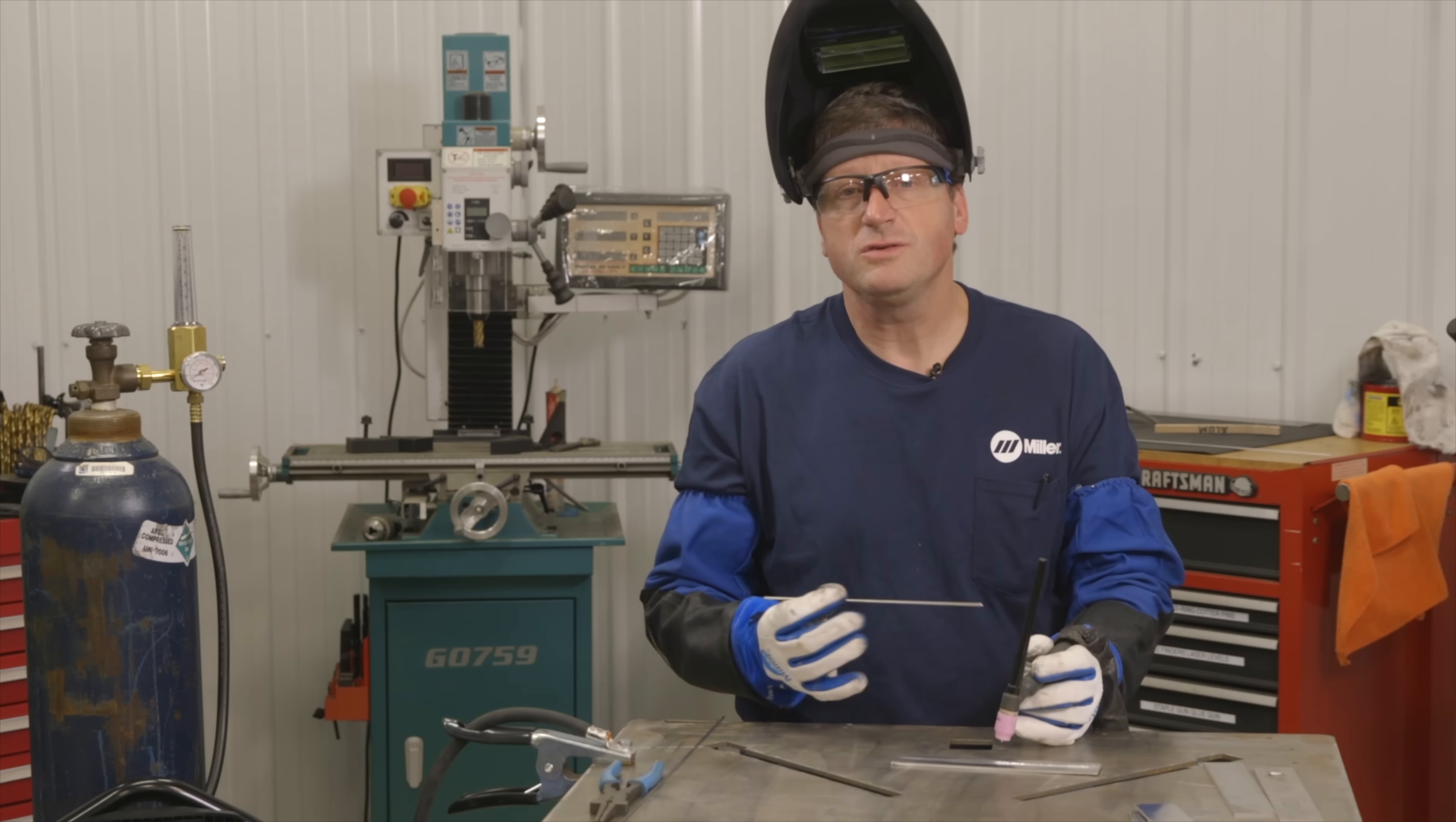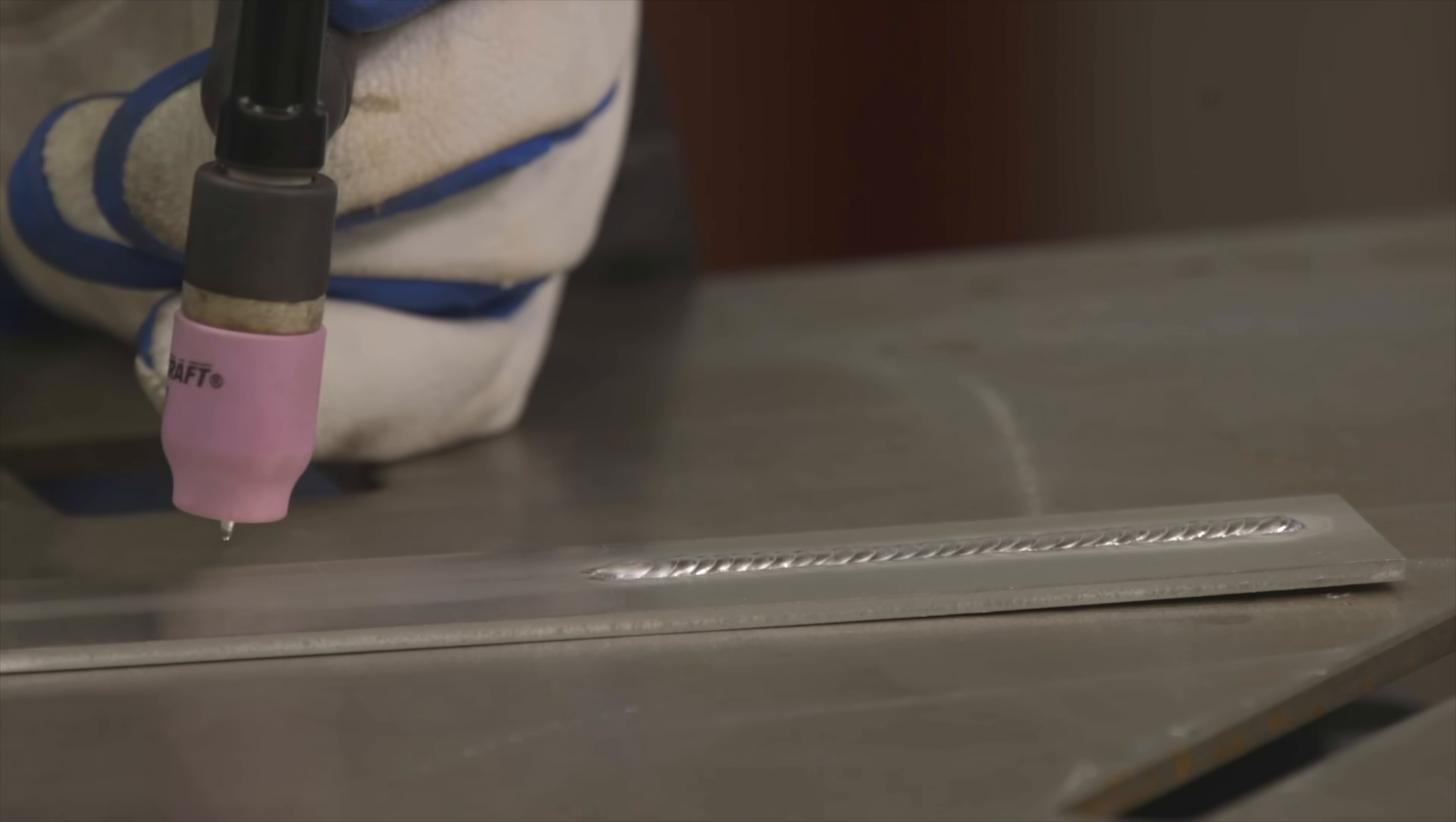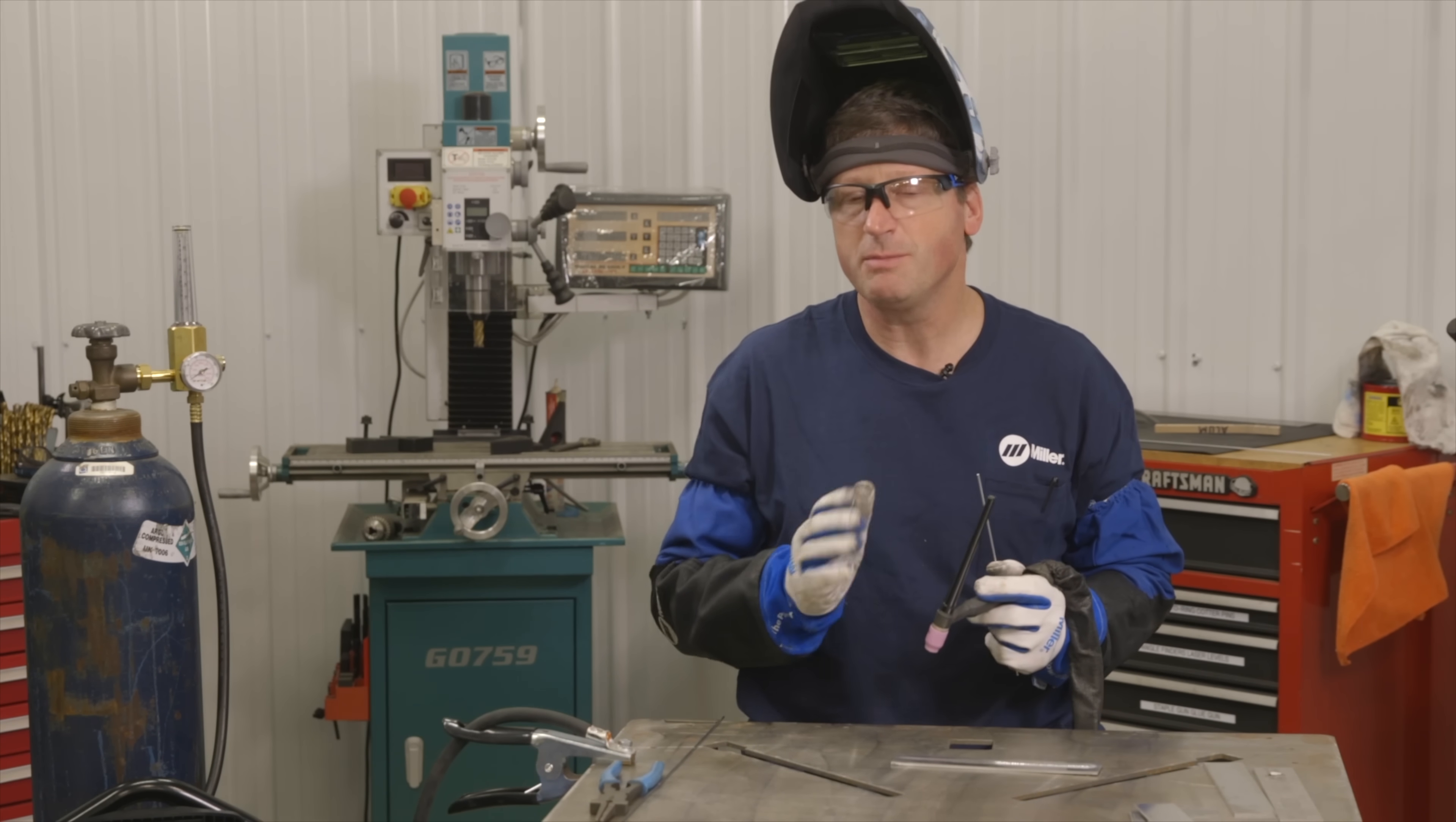Now once you get that rhythm established you're going to want to start increasing that pulser, the pulses per second. What that's going to do is turn you from a step welder where you're stepping the weld as you're adding the filler metal and moving over, to being more of a consistent even moving TIG welder where you're just adding the filler metal and the torch is moving at a constant rate. So I'm going to make that quick adjustment, I'm going to jump up my pulses per second to about 1.2 maybe 1.3.